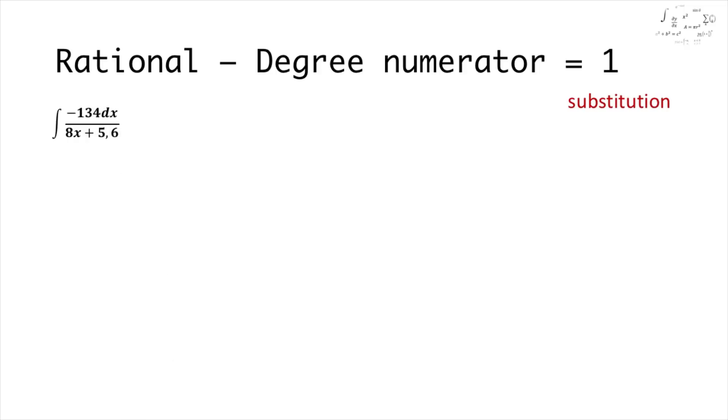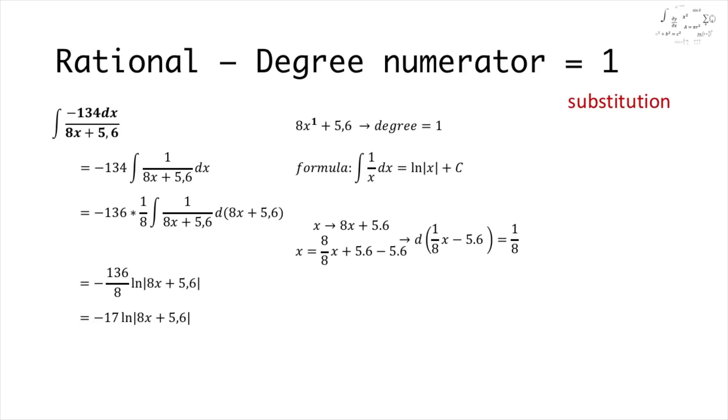The second example is the integral of minus 134dx over 8x plus 5.6. All the steps are equal to the previous exercise, since the degree of the numerator is equal to 1 and is greater than the degree of the denominator.